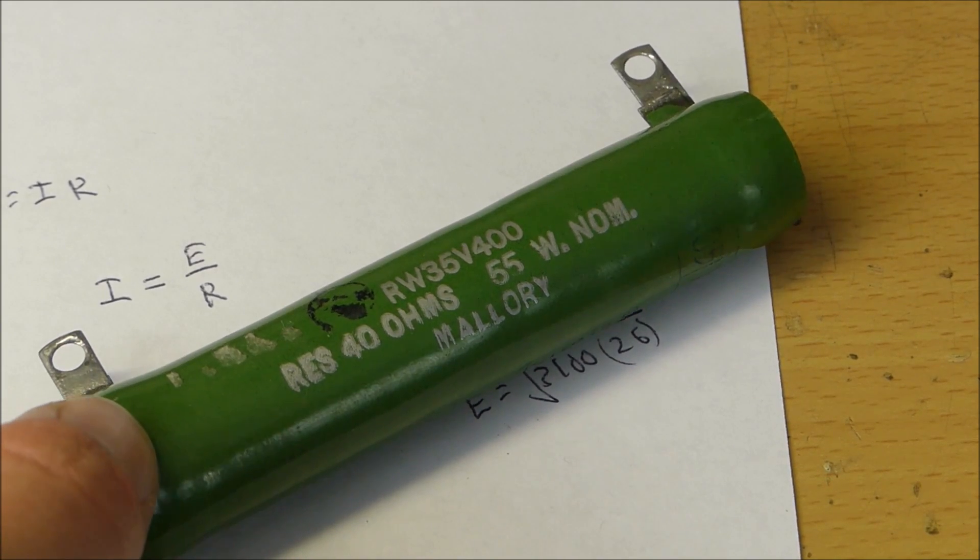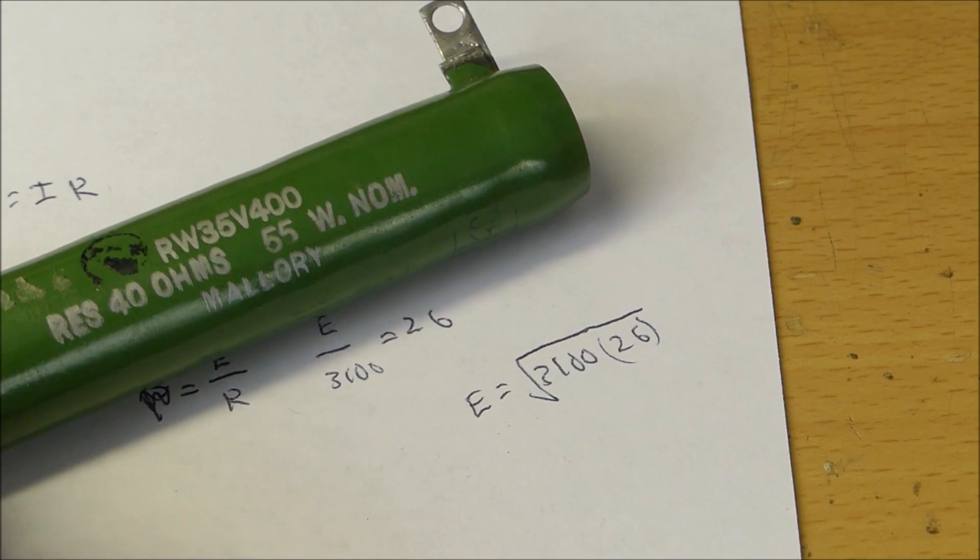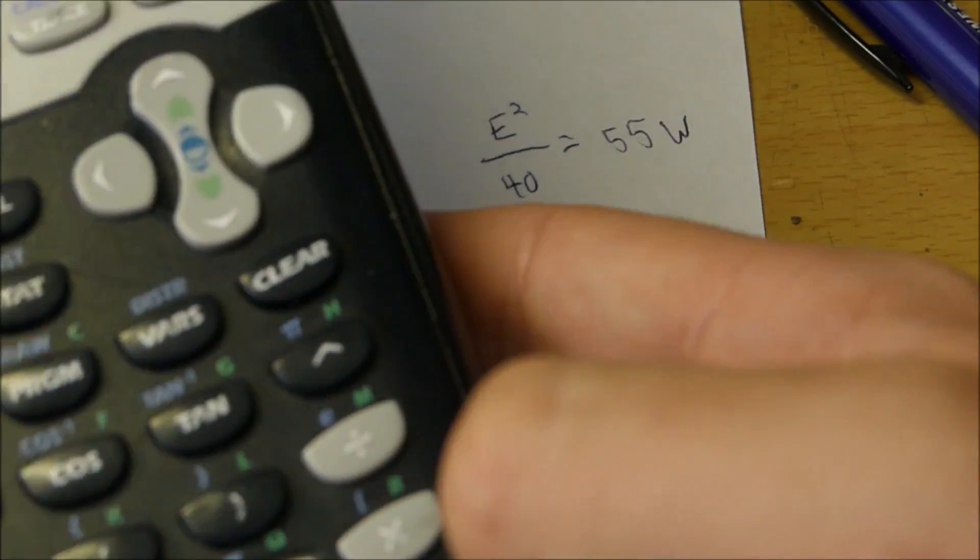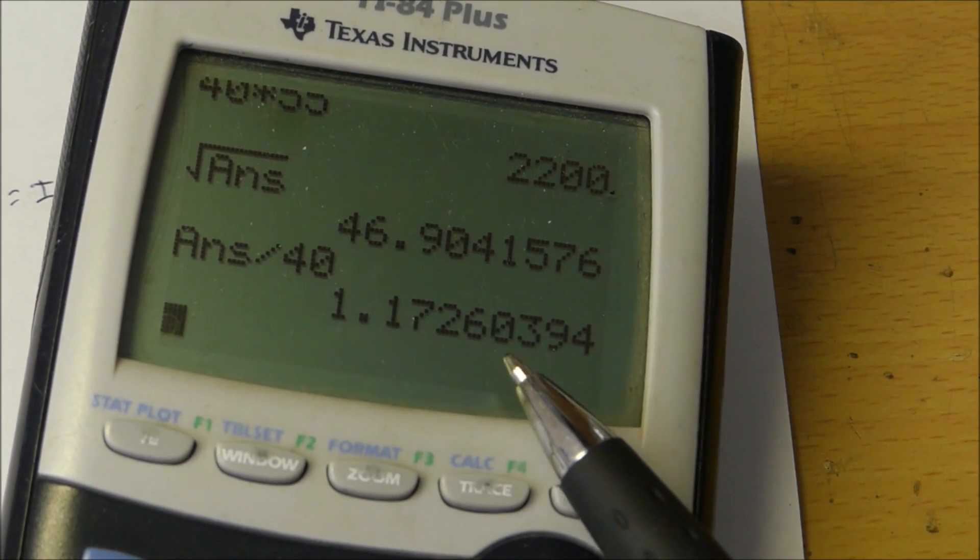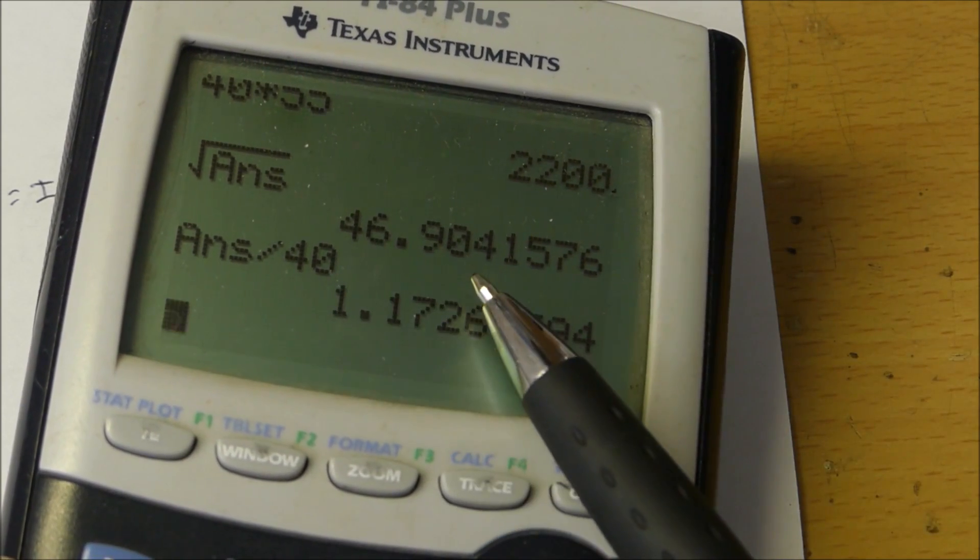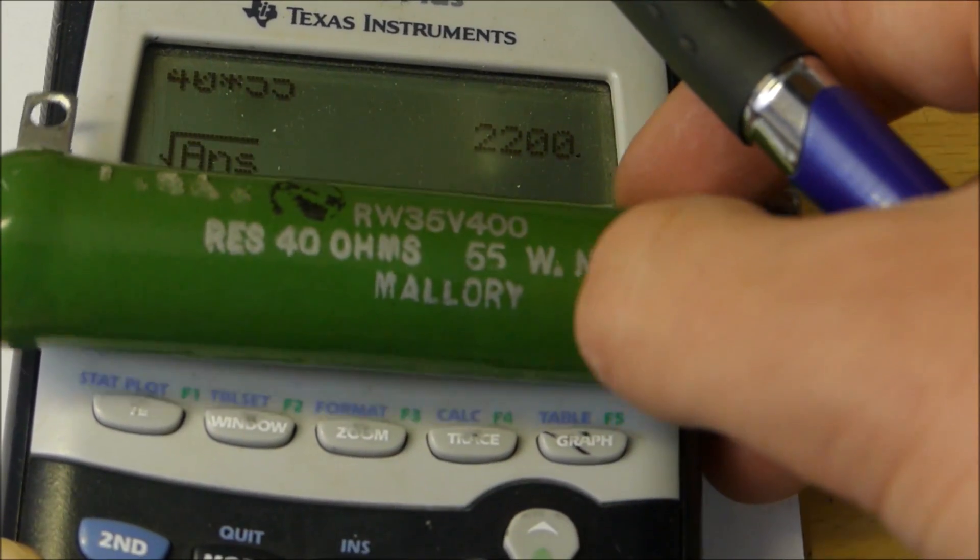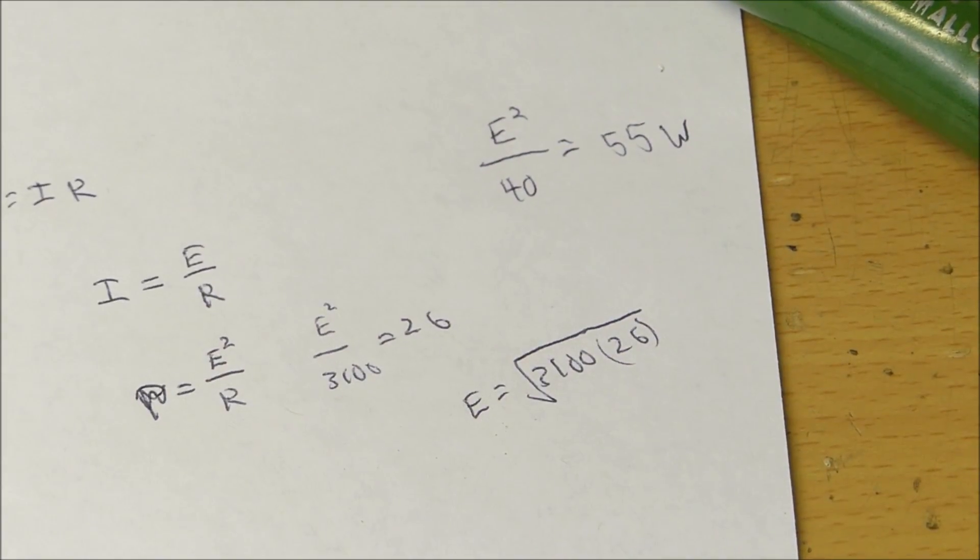Now let's calculate that value for this 40 ohm resistor, to see if we can surpass that value. That means we would need to have a current of 1.17 amps, and a voltage of 46.904 volts, to make this resistor go over its 55 watt value. We could try that with a variac.